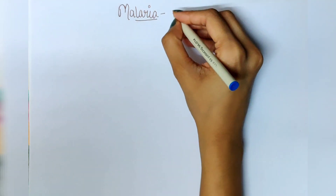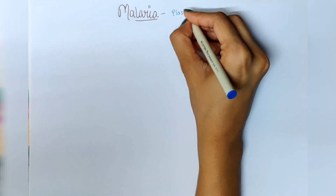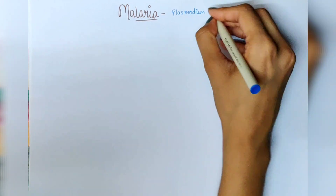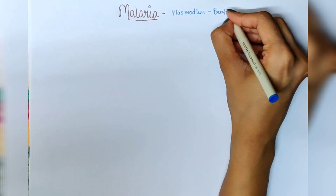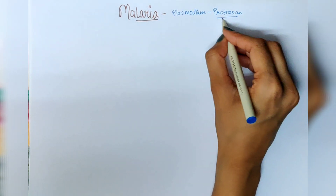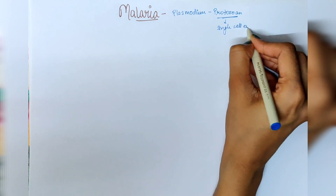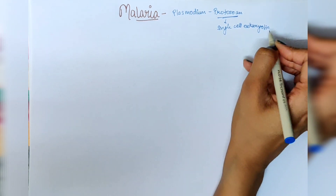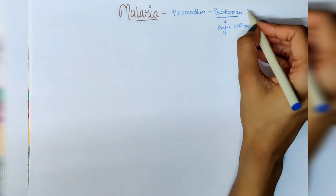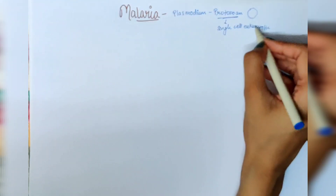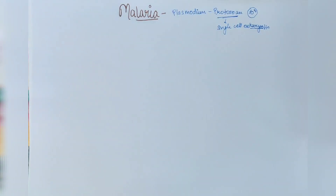Malaria is caused by a protozoan known as plasmodium. Plasmodium is the protozoa which causes the disease known as malaria. Protozoa are single-celled eukaryotic organisms, meaning they have a nucleus, Golgi apparatus, ER — all the organelles.